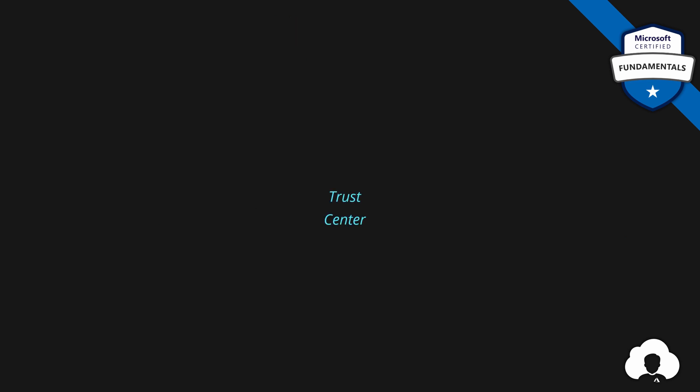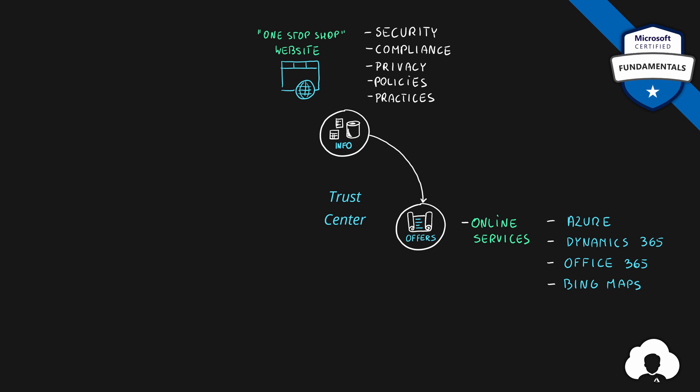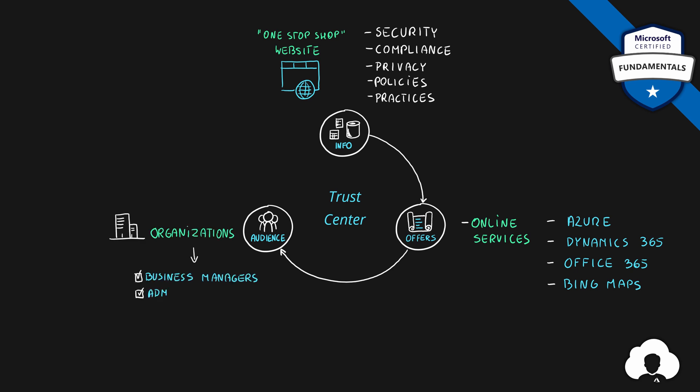Besides the documents themselves, you also have something called Trust Center. First of all, Trust Center is a website — a one-stop shop, a single place for your company to review all information regarding security, compliance, privacy, policies, and best practices around Microsoft services. It provides information for all online services of Microsoft. This website is great for anyone in your organization because it starts at a very high level, but as you move through it will go deeper into each specific topic, providing helpful links, tools, checklists, and plenty of online resources. It's designed for anyone who cares about security, compliance, or privacy — business managers, administrators, security teams, and legal teams.